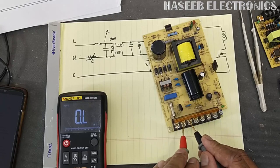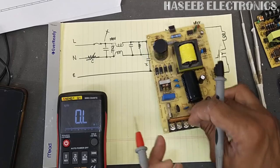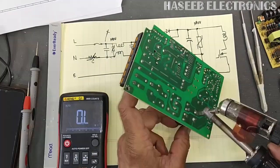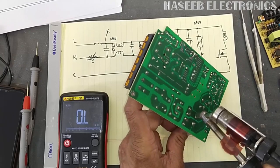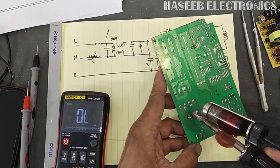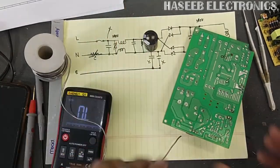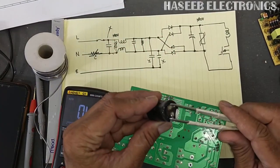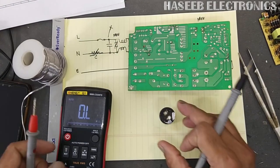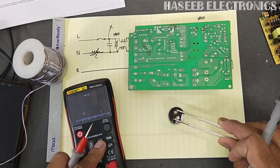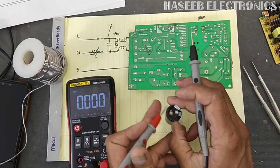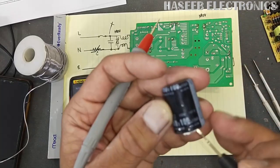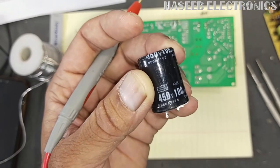Between ground and line it must be open; between neutral and ground it must be open. These are our checkpoints. For testing, first remove the bulk capacitor — that is our first step. Discharge it. Now we can test the capacitor. Set the multimeter to capacitance — it reads 994.11, so it is approximately 100 microfarad 450 volt — reading 95, that is good.